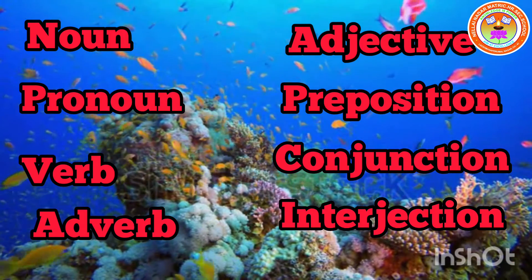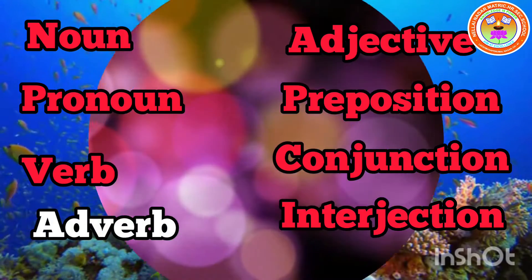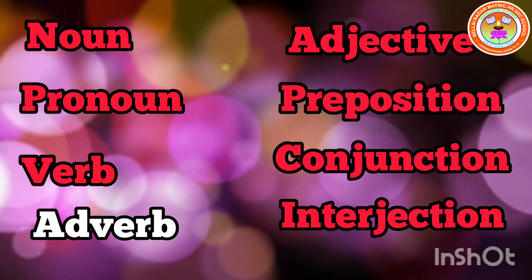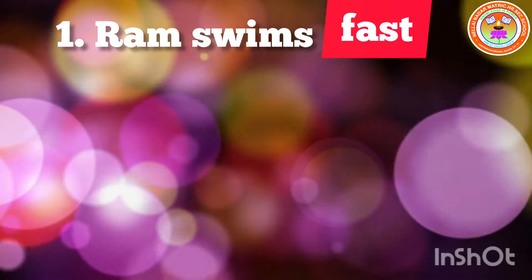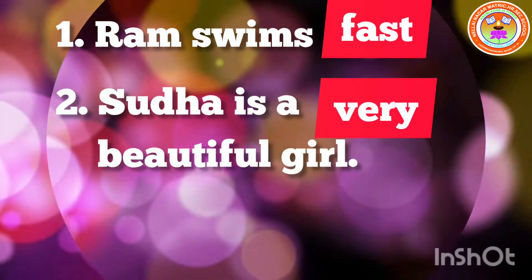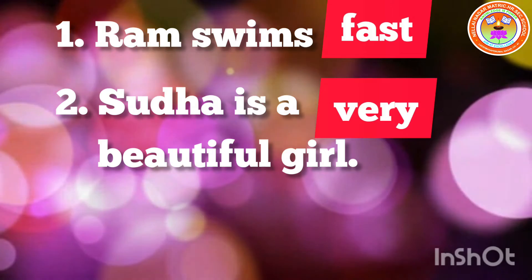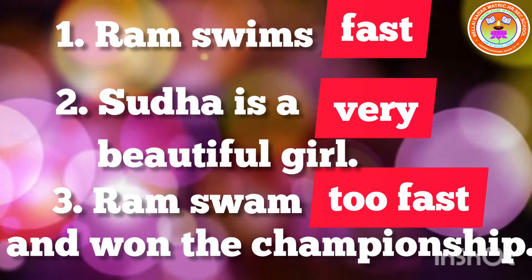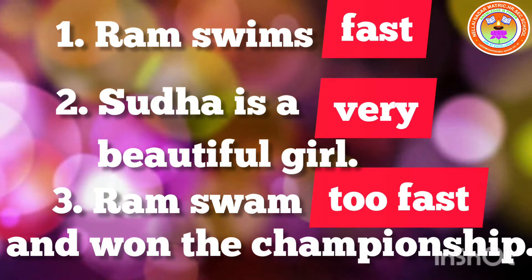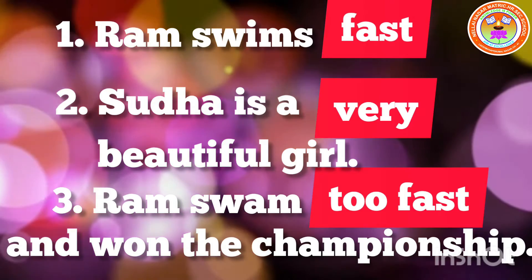From the above mentioned parts of speech, we are going to learn about adverb in detail. Read the following sentences. First one is Ram swims fast. Second one is Sudha is a very beautiful girl. Third one is Ram swam too fast and won the championship. In the above given sentences, the highlighted words are adverbs.